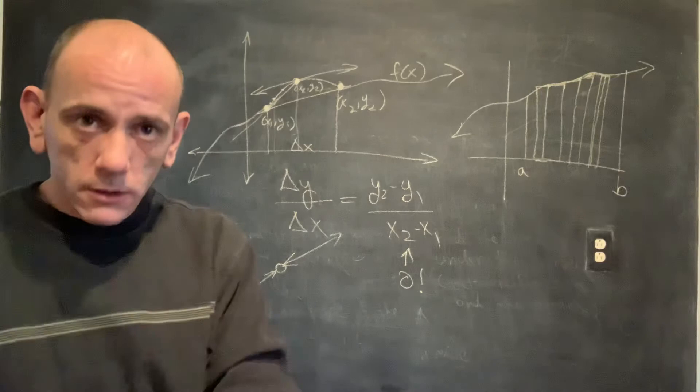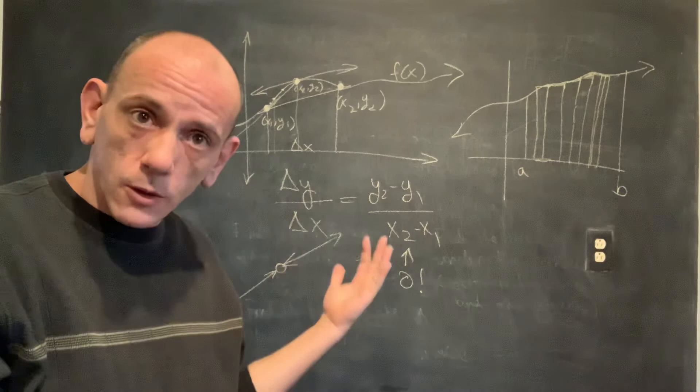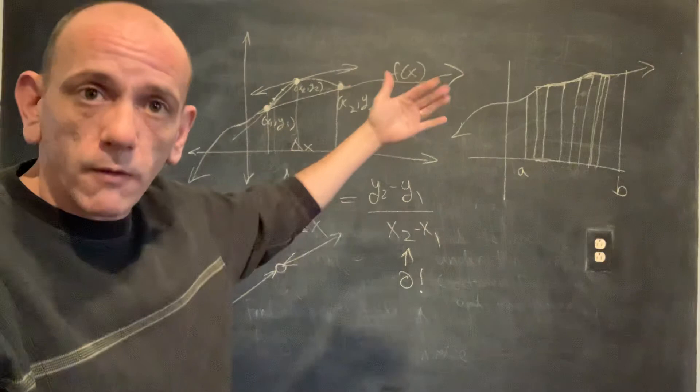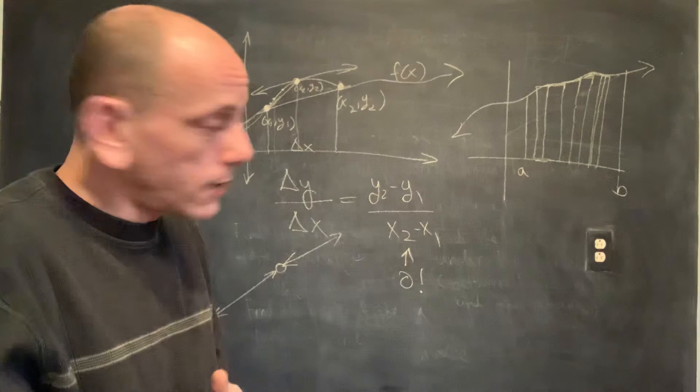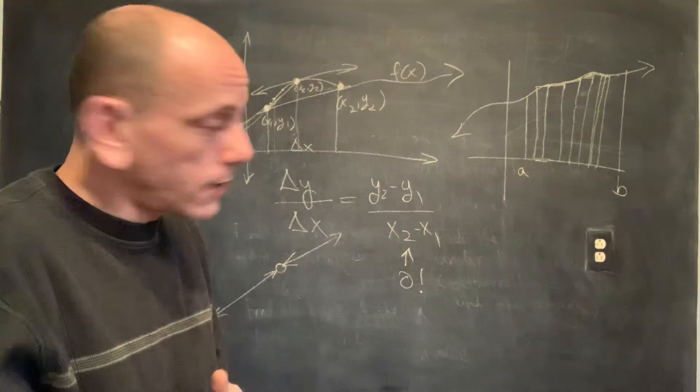So that's basically a preview of what calculus is. We've got these two operations: the derivative and the integral. One finds the instantaneous rate of change, or the slope of the tangent line. The other finds the area between a continuous function and the x-axis. These two operations are inverses of each other, and we'll study the basics of what those rules are and how to use them.